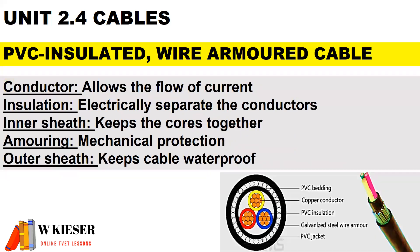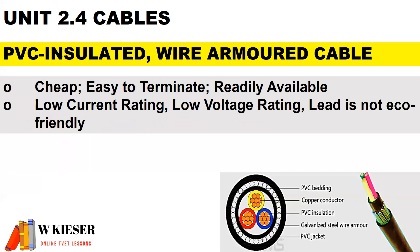For a PVC insulated wire armoured cable, there are different components. The conductor itself allows for the flow of current. The insulation electrically separates the conductors. The inner sheath keeps the cords together. The armoring provides mechanical protection, and the outer sheath keeps the cable waterproof. The advantages are: it is cheap, easy to terminate, and readily available.